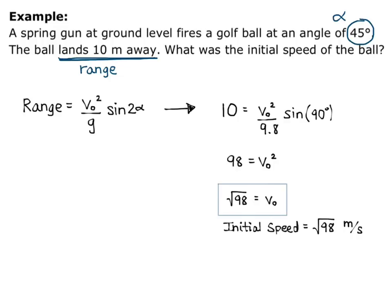Remember, speed is a magnitude, so it's always positive. When we're talking about speed, there's no direction attached, so you'll always get a positive value when doing this.